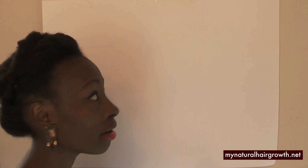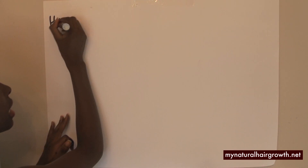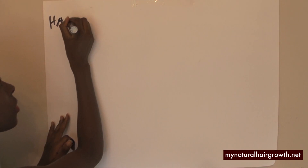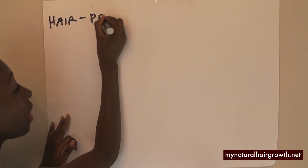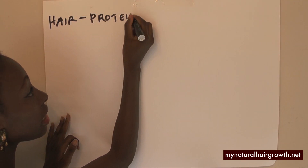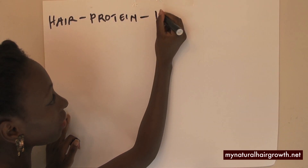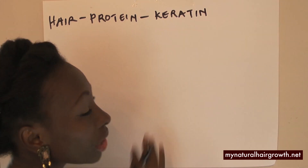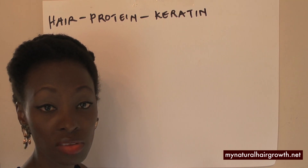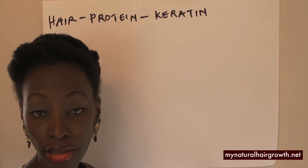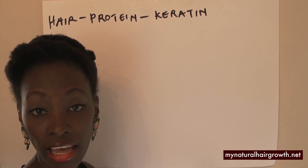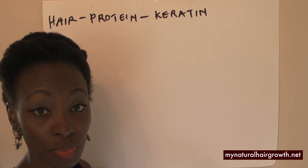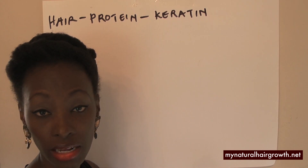So if you talk to anybody about hair, or if you've read a little bit about hair, most of us know that hair is a protein, and the name of that protein is keratin. Now keratin is the protein that's most abundant in hair, hooves, nails, and even feathers. Another type of protein is something like collagen.